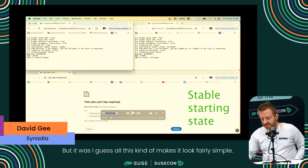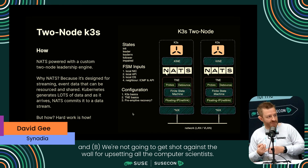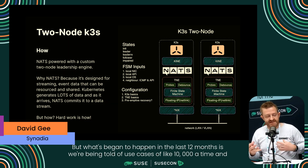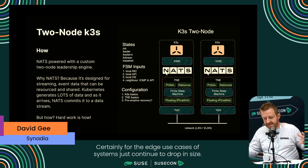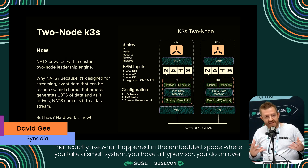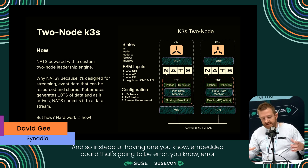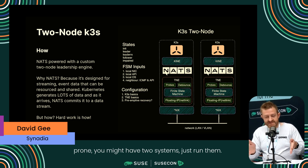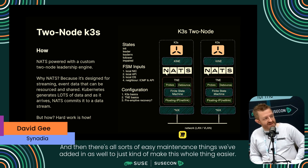I guess all this makes it look fairly simple, but it was months and months of trying to make sure we were doing the right thing and not going to upset all the computer scientists. What's begun to happen in the last 12 months is we've been told of use cases of 10,000 at a time. For edge use cases, as systems continue to drop in size - exactly like what happened in the embedded space where you take a small system, have a hypervisor, do an over-the-air update - for machines that need to be in production for 10 years, this approach makes total sense. Instead of one embedded board that's error-prone, you have two systems - if one goes down, swap it out and bring it back up.